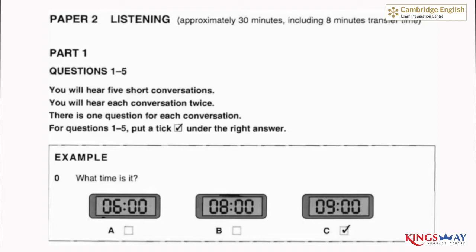Look at the instructions for part one. You will hear five short conversations. You will hear each conversation twice. There is one question for each conversation. For questions one to five, put a tick under the right answer. Here is an example.